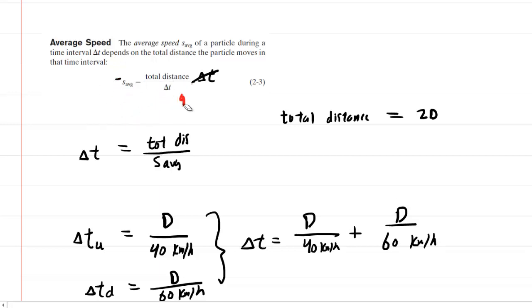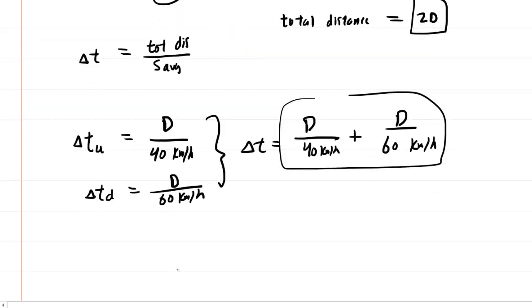So now we go back to the average speed equation, and we note that the average speed is total distance divided by total time. Well, here is the total distance, and here is the total time. So we're going to divide those to get the average speed. So total distance was 2d divided by d over 40 plus d over 60.